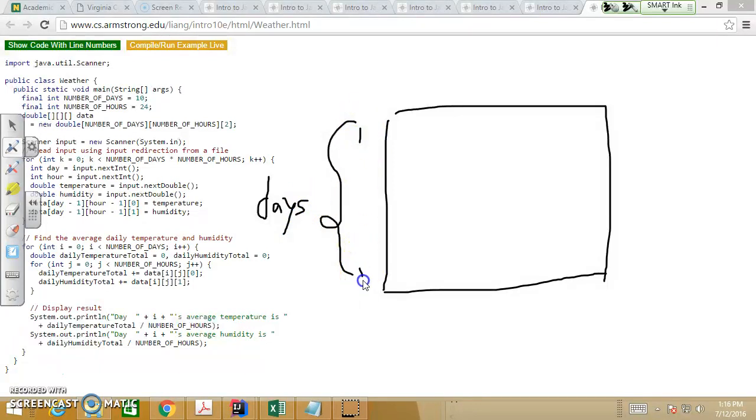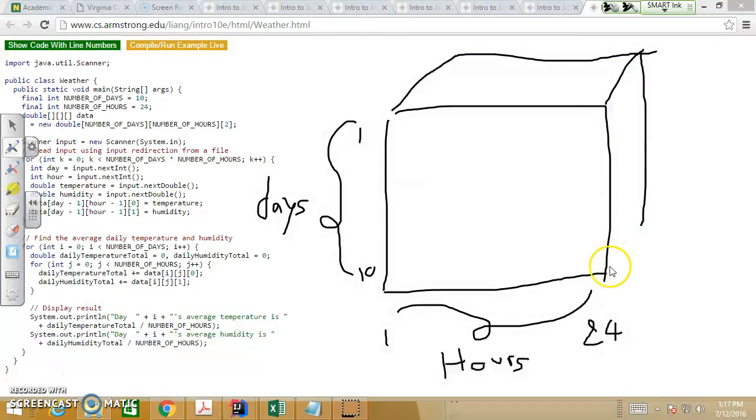Day one to day 10. And columns is the hours. Hour one to hour 24. But index, we're going to start from 0 to 23 and 0 to 9. But now it's just writing, then you see it. And the depth, we just represent what? Two data sets, which is humidity and temperature. Right, so if we say humidity.